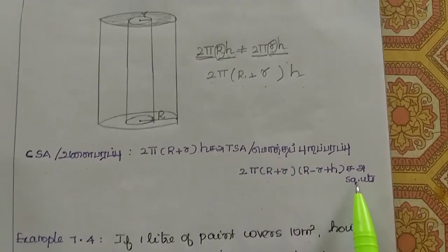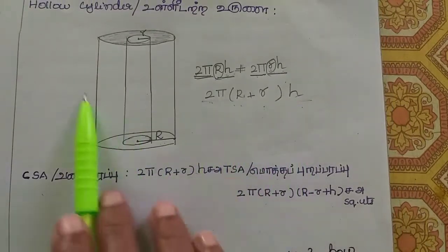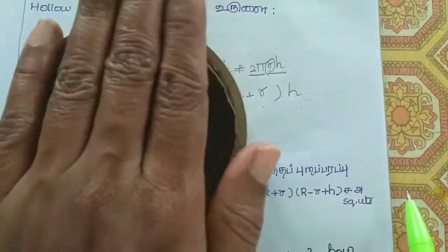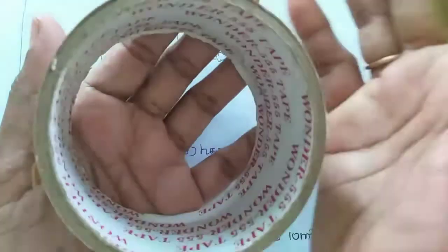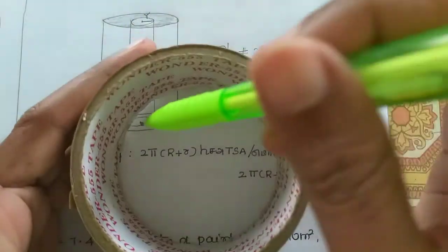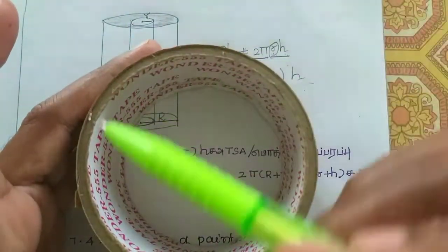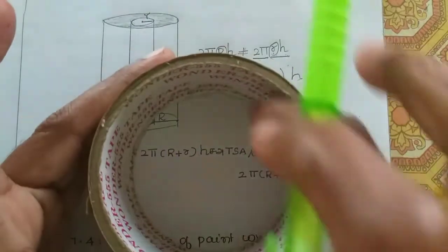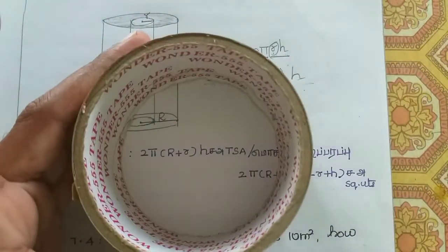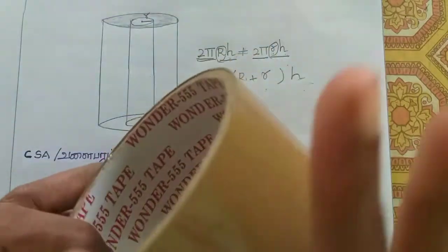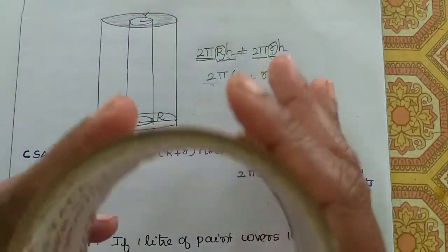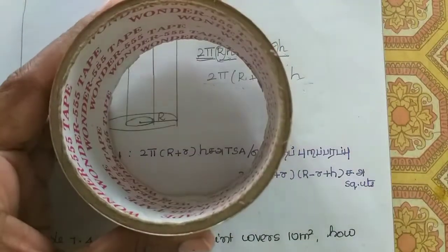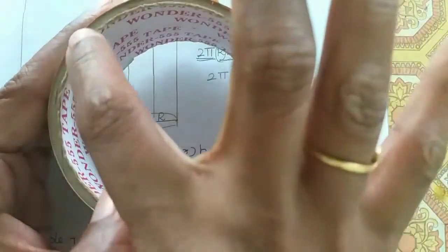Now, what do we do for the total surface area? The curved surface area is one part. This is the total surface area — closed at top and bottom. We also need to add the top and bottom ring areas. So you add the curved surface area plus the top and bottom areas — that gives the total.